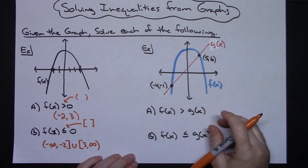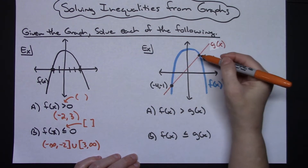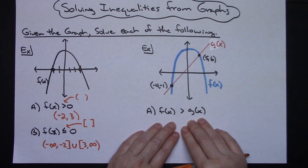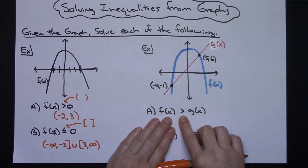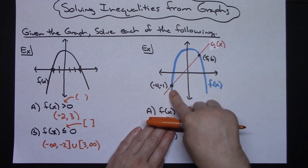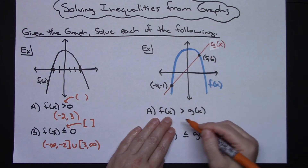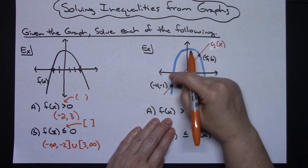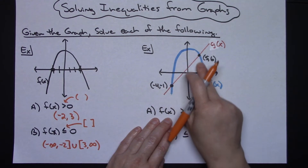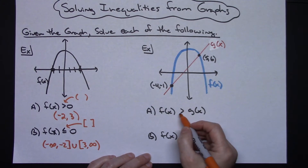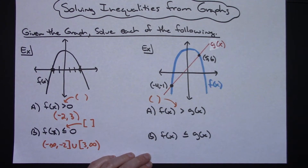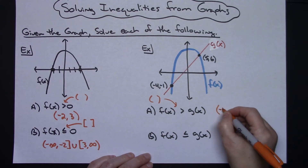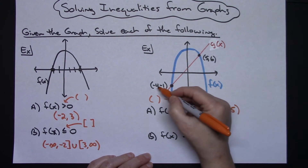Now for this one over here we've got a quadratic and a linear equation, and the points of intersection are indicated so we can clearly see what they are. Solving this: where is f of x greater than g of x? My f of x function is the blue line and g of x is the red line. The f function is above the g function in between the x values of negative 4 all the way over to 5. It says greater than, so I use curvy brackets: open bracket negative 4 all the way up to 5.